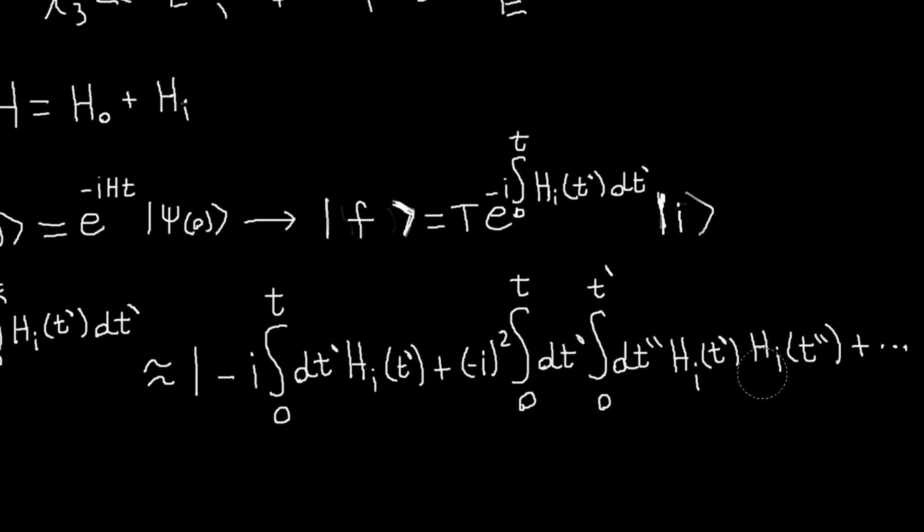For this term, you have this operator evaluated at T prime, this one evaluated at T prime prime. And, the way he writes out, takes care of the time-ordering is, well, this integral over dT prime prime only goes up to T prime. So, T prime prime is always earlier, less than T prime. So, it's time-ordered in that way.